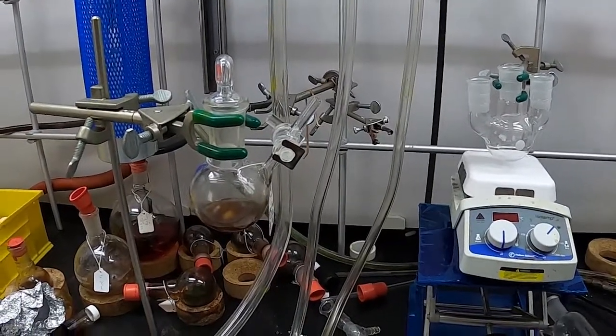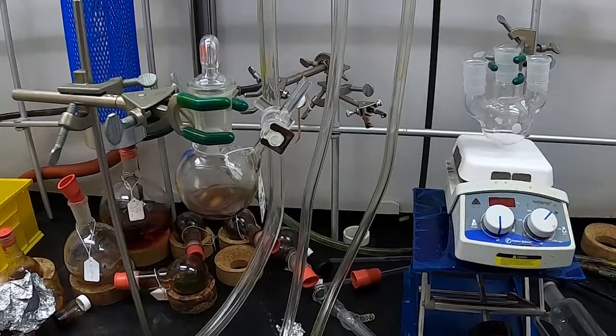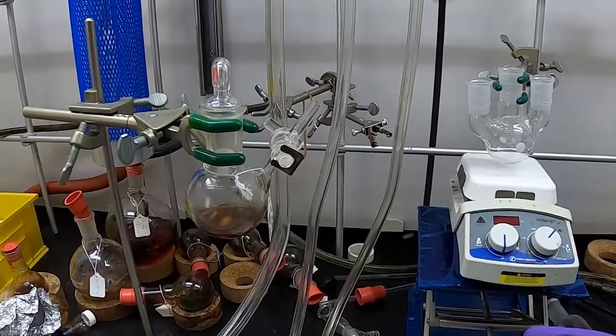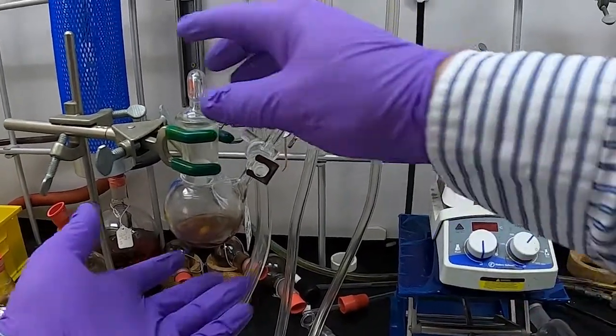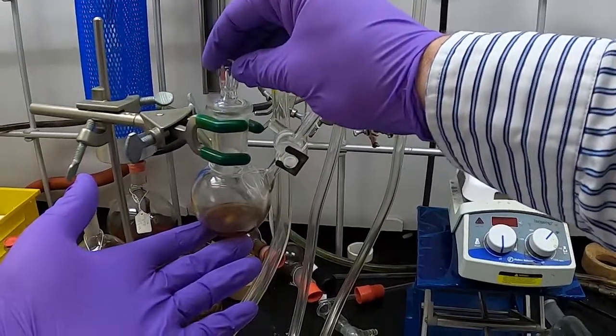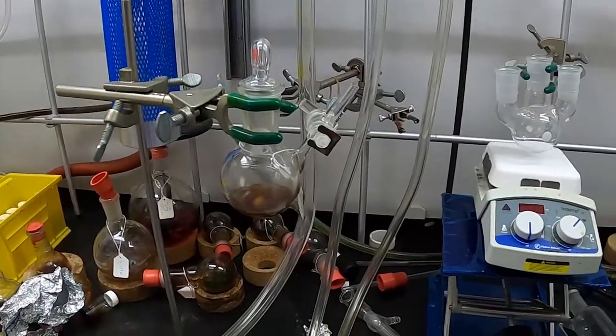All right, today's topic is working with Schlenk lines and trying to keep your ground glass joints together. As you can see, we have this Schlenk flask here with a glass stopper.